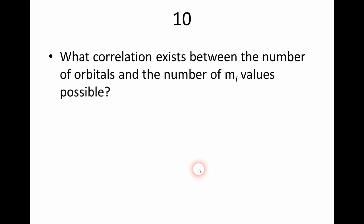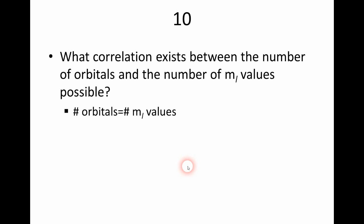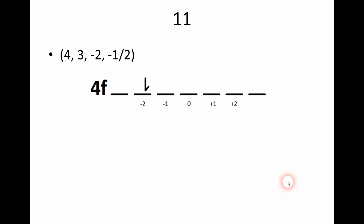Question ten asks about the correlation between the number of orbitals and the number of possible M sub L values. Looking at our previous answers, we can see that the number of orbitals equals the number of possible M sub L values — that is to say, each orbital is assigned an M sub L value.